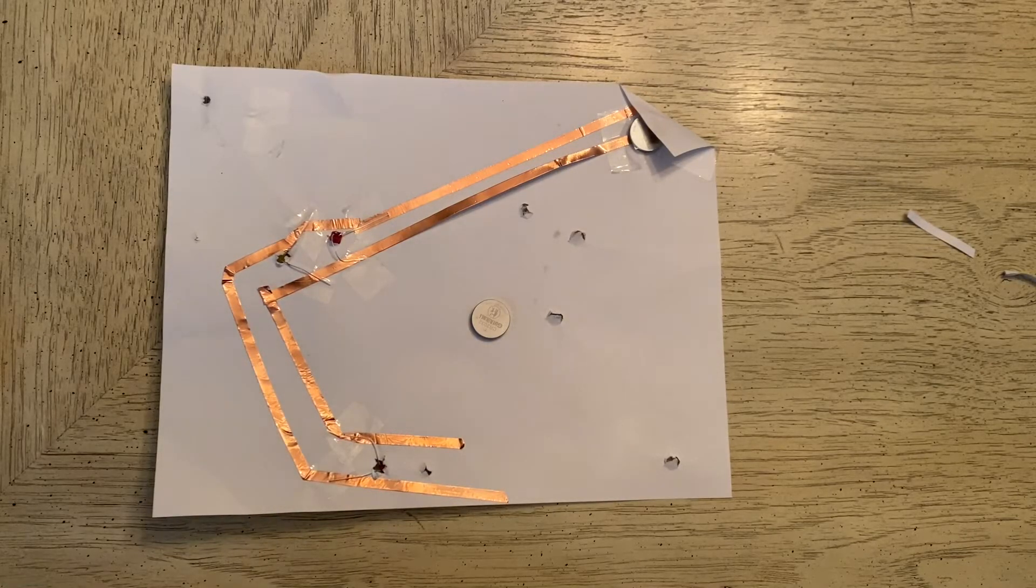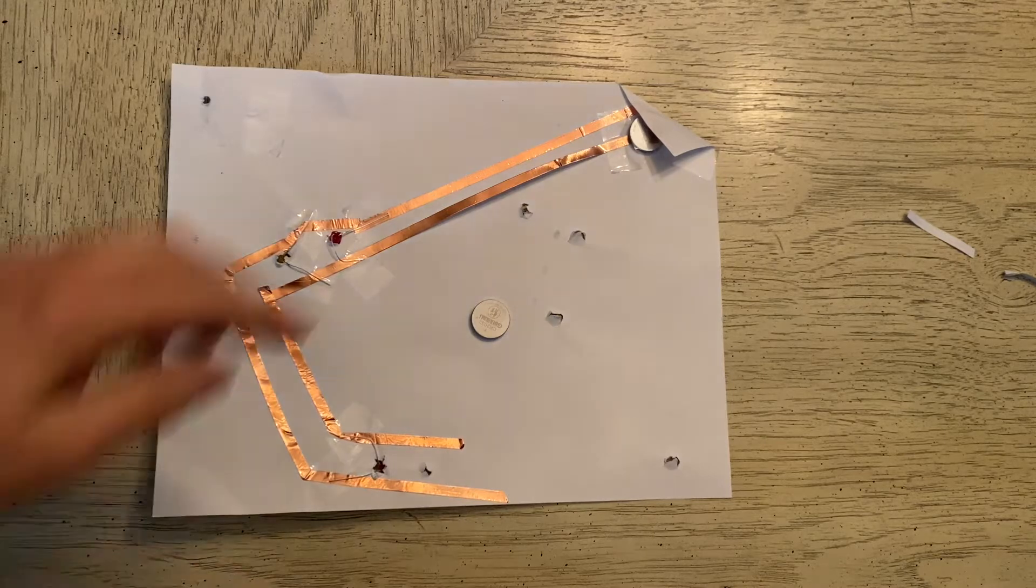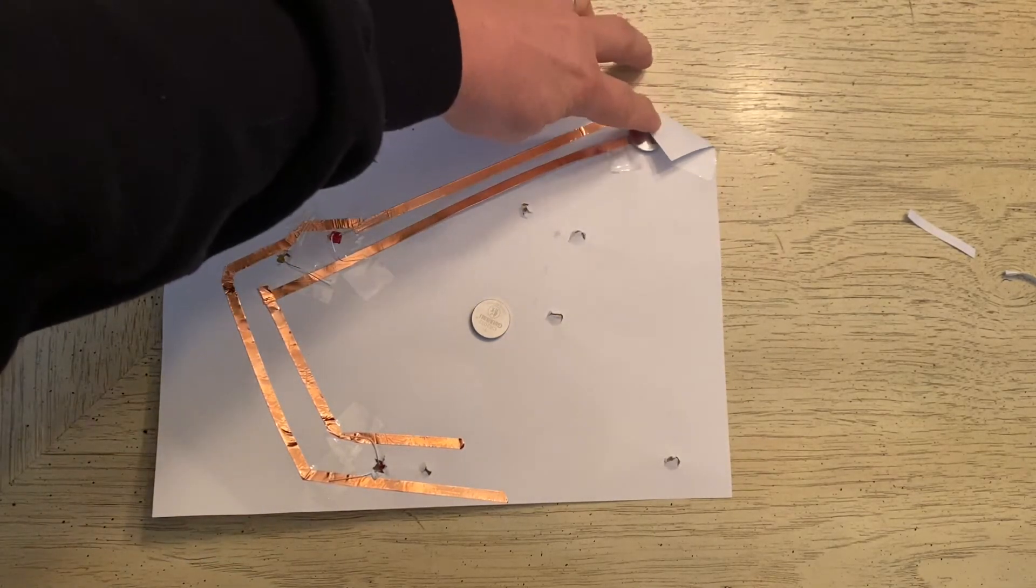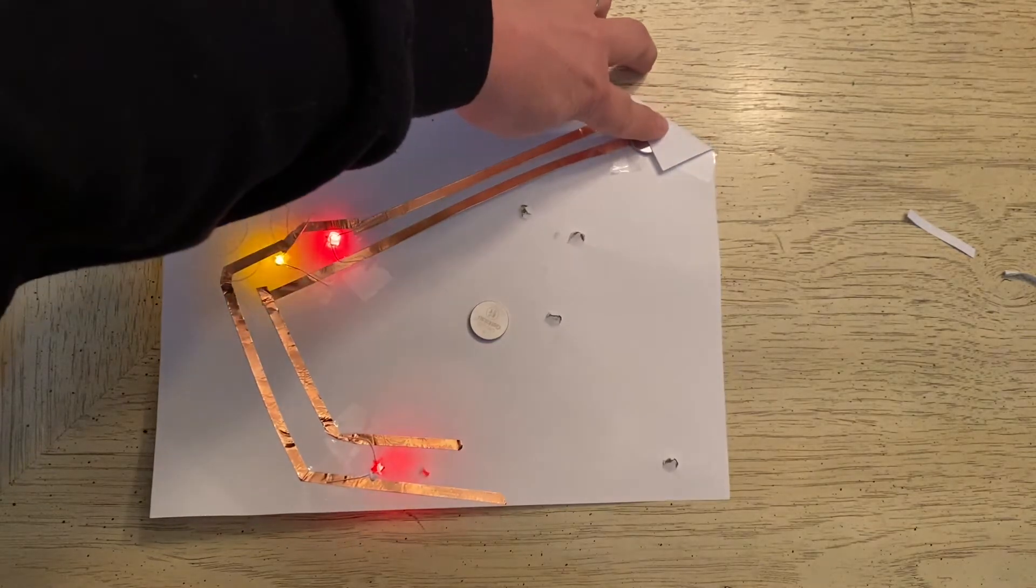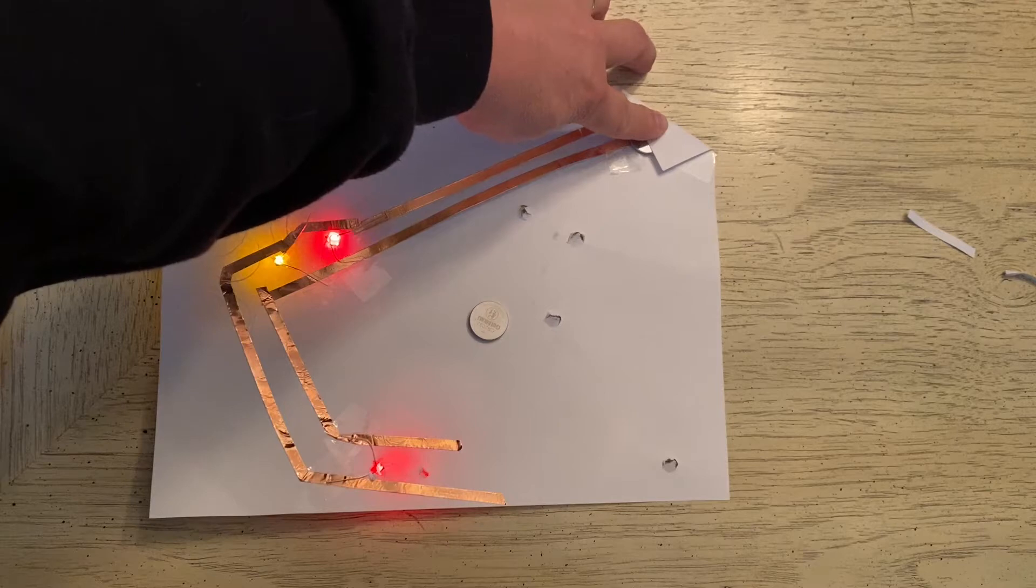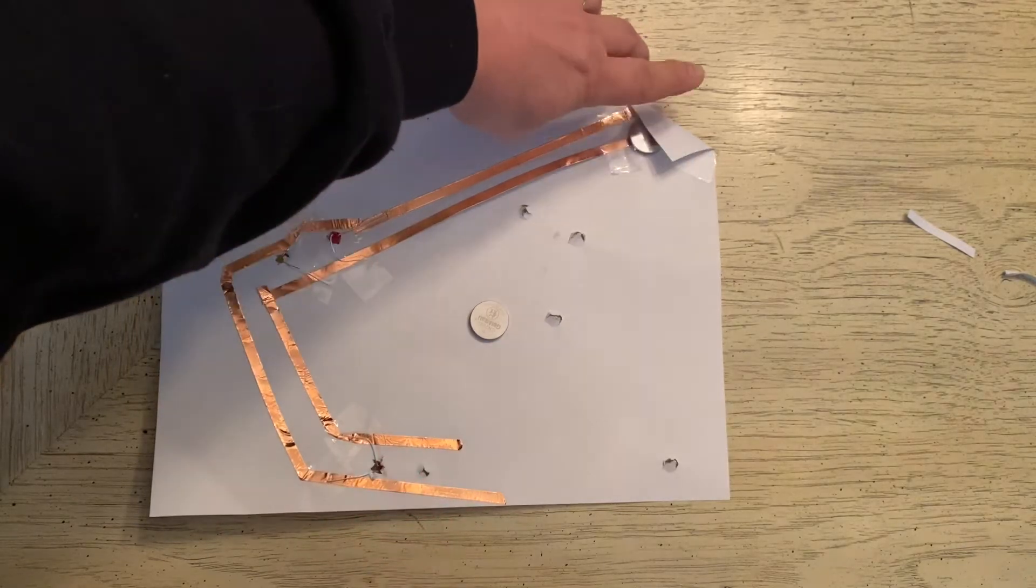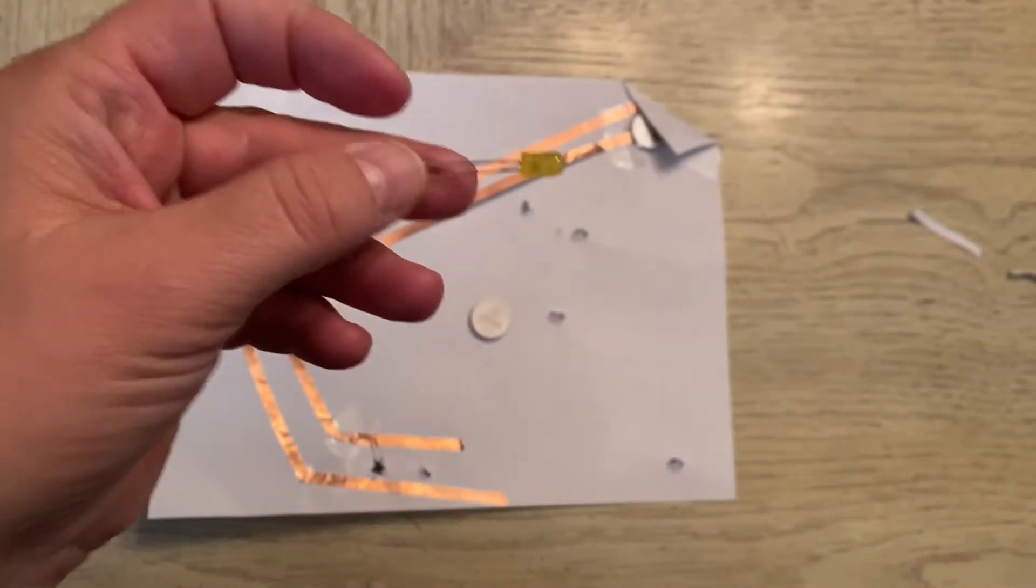I want to show you partway through this project how I troubleshoot it. I started with my switch, and every time I add a battery or a light, I make sure that it works. You can see that I've added three LEDs—red, yellow, and red—on the backside of my project.